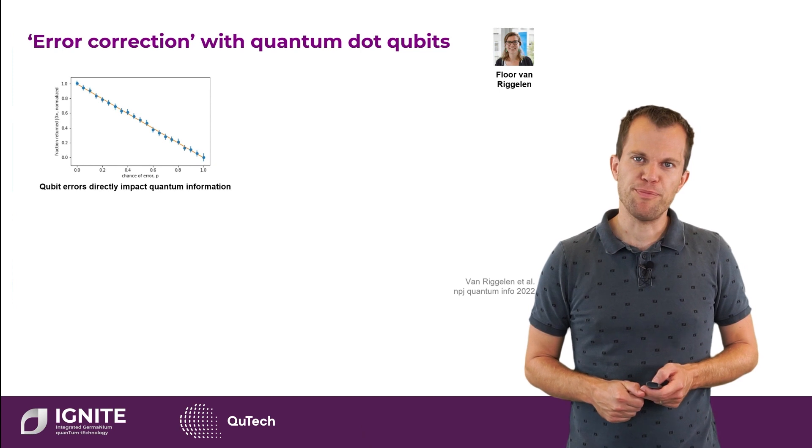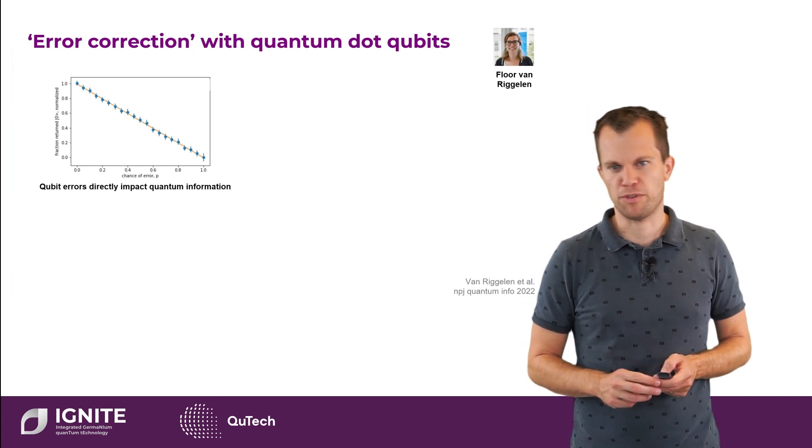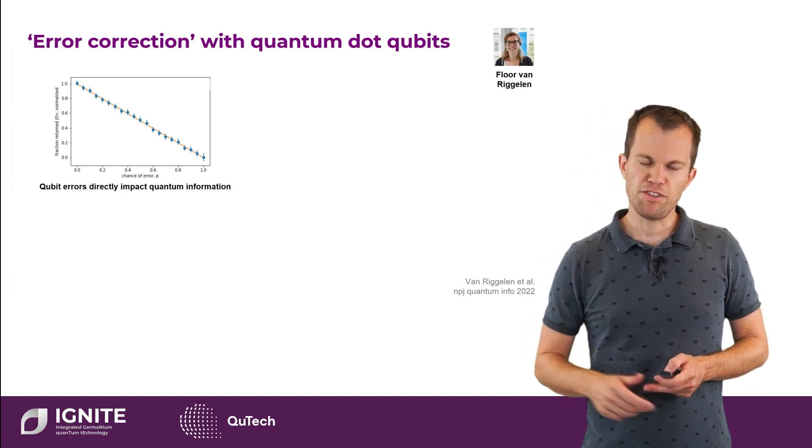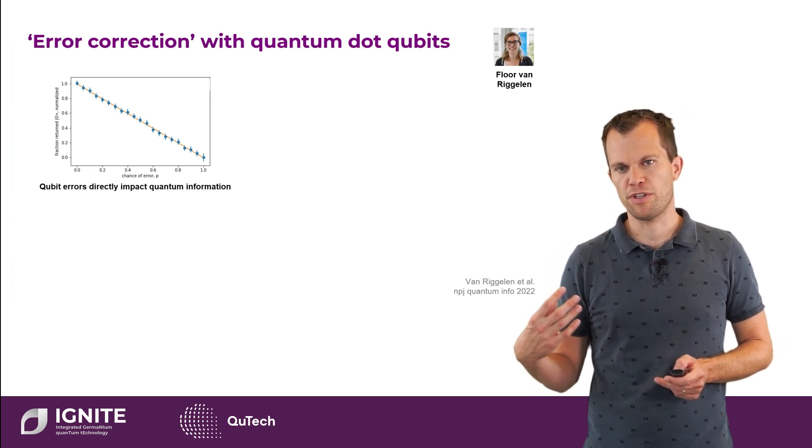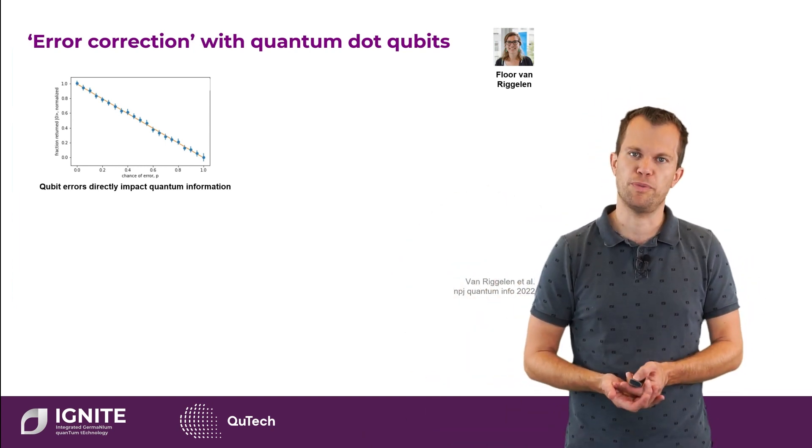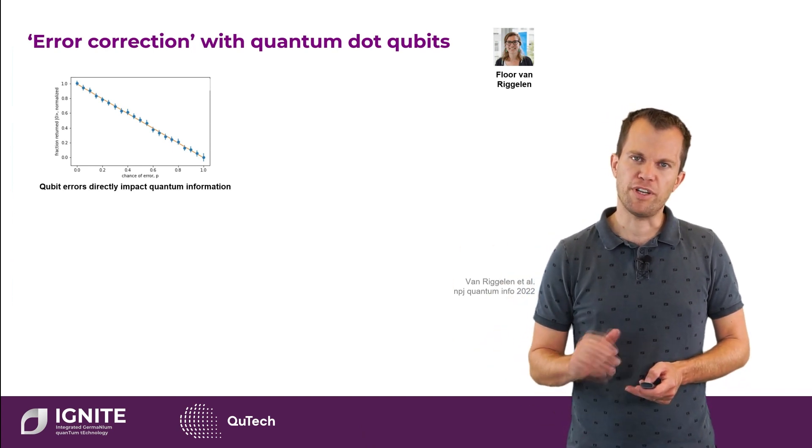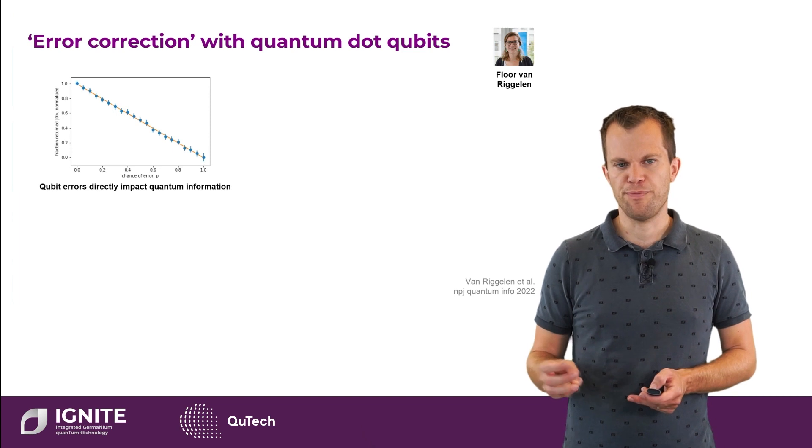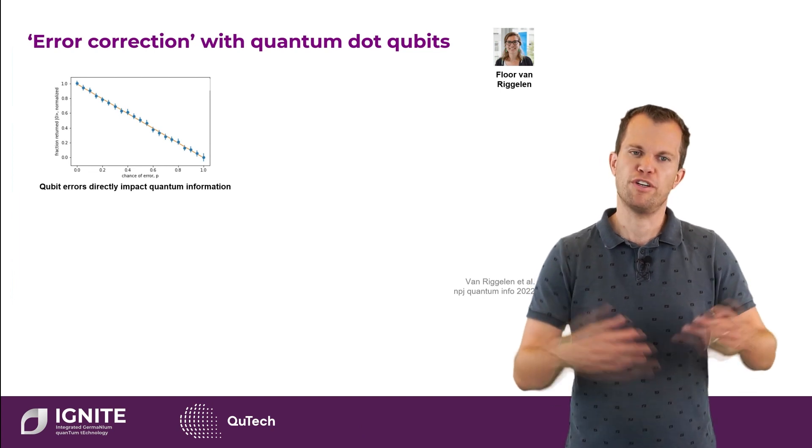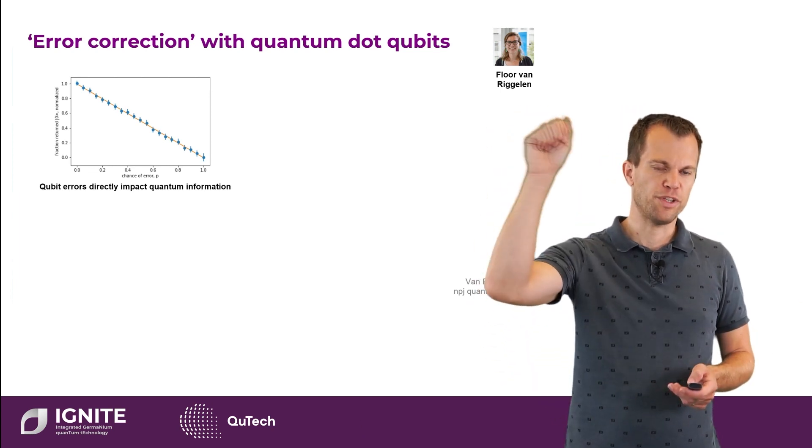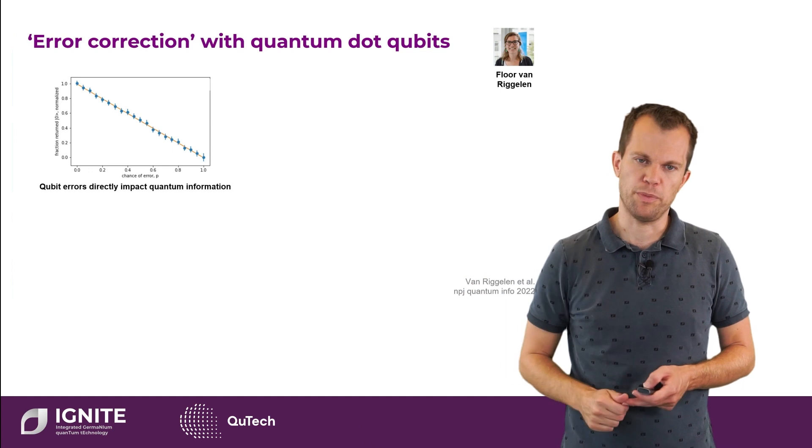To take it a step further, we can study whether we can execute error correction with quantum dot qubits. So this is a crucial part if we want to build a fault-tolerant quantum computer. The idea is that we may be able to use many physical qubits to build better logical qubits. And here we wish to take a first step in that direction. In particular we observe that there's a linear relation between an error and the possible output state of a qubit if we don't do anything. And this makes sense. If there's no error we just end up with the original state. If the error is 100% then we just flipped the qubit state.